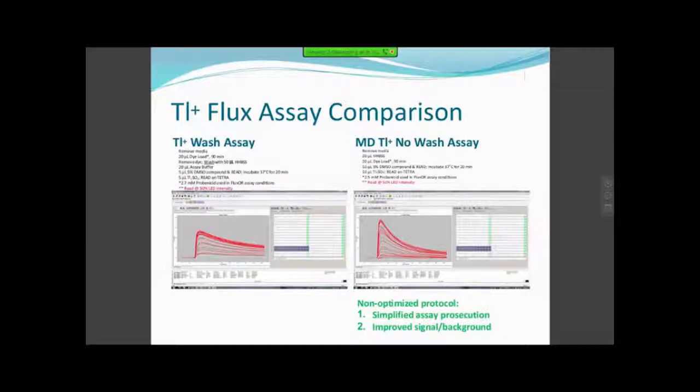This is data comparing the two different kits. As I mentioned before, the quencher basically allows you to remove this washing step, and that simplifies assay prosecution. Certainly within our HTS format, it made some of the logistics much simpler and prosecution quicker. The other thing you'll notice is that there's an improved signal to background. With the thallium wash assay kit, you get about a two-fold here. Whereas in the Molecular Devices kit, you actually see something very close to three-fold. I should also point out that I did no optimization on this Molecular Devices kit, because I didn't have enough beta reagents to do this. All I did was take the reagent they gave me and implement it in the optimized assay conditions that I established for the wash assay.